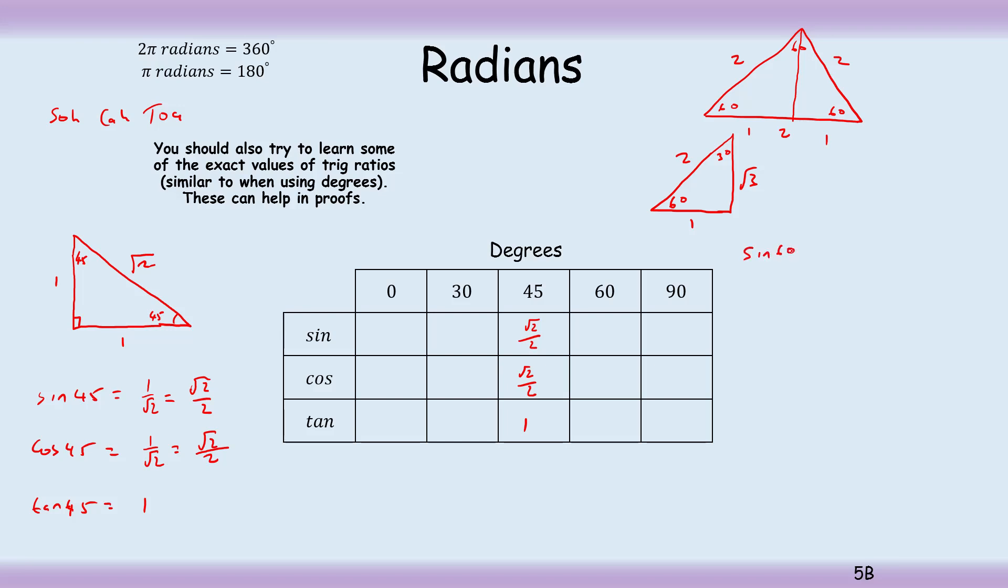Sine of 60 is equal to sine of 60, it's going to be opposite over hypotenuse, root 3 over 2. Cos of 60 is going to be adjacent over hypotenuse, a half. And tan of 60 is equal to opposite over adjacent, so that's root 3. You can fill the table in here with root 3 over 2, a half, and root 3.